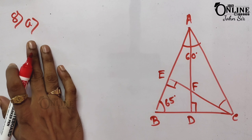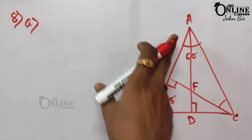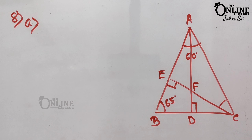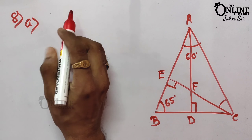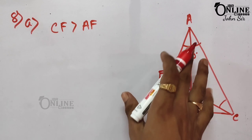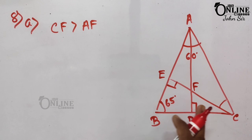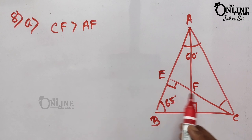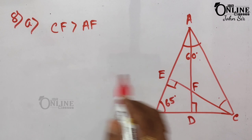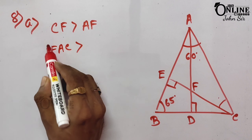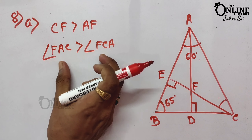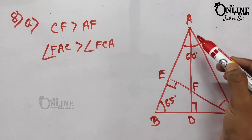Now sum number 8A. Here ABD is a triangle and AD and CE are perpendiculars. We have to prove that CF > AF. To prove CF > AF, the opposite angle of CF must be greater than the opposite angle of AF. So we need to show that angle FAC > angle FCA.